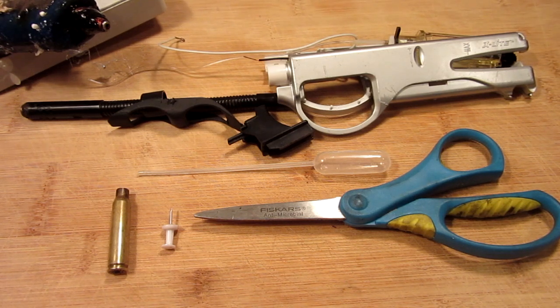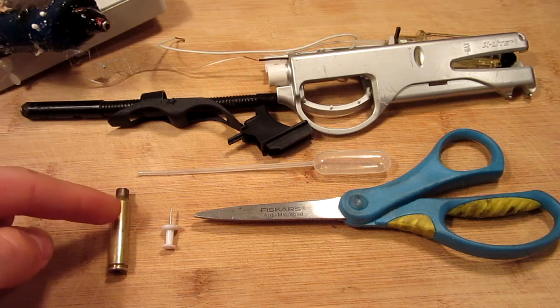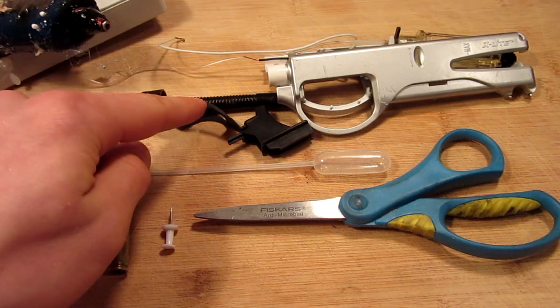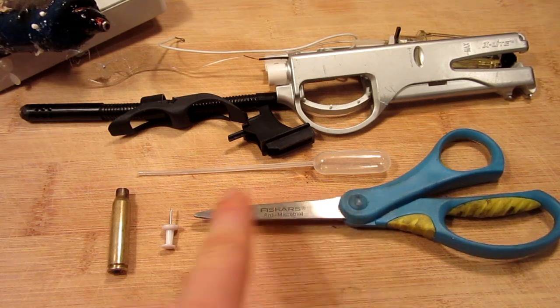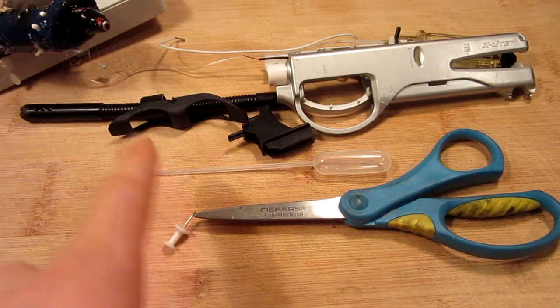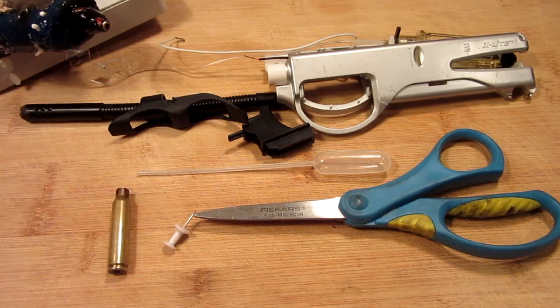What you'll need for this project is the bullet shell casing, an old lighter already disassembled a little bit, a pipette, some scissors, a thumbtack, a hot glue gun, and possibly some tape.